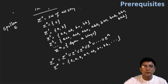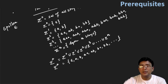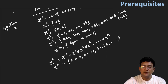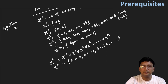So in today's lecture, we have discussed about the prerequisites for the TOEFL subject — meaning the theory of automata and formal languages. And in the next lecture, we will start with the DFA concept — deterministic finite automaton. Thank you so much for watching.